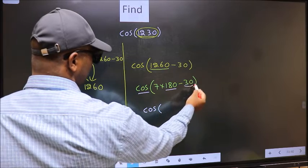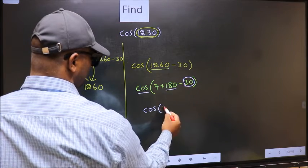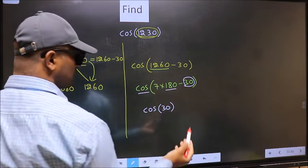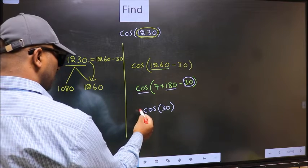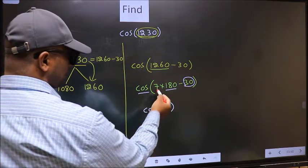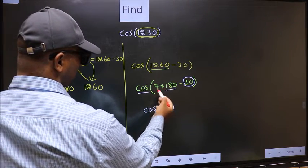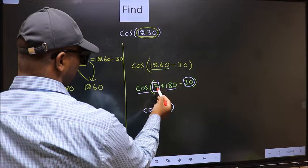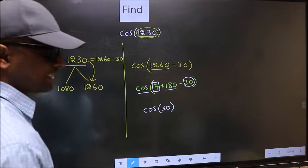And inside, we get this angle, 30. Now the question is, will we get here plus or minus? To answer that, we should look at the number before 180. That is 7. And 7 is odd.